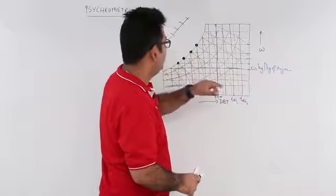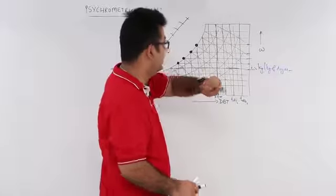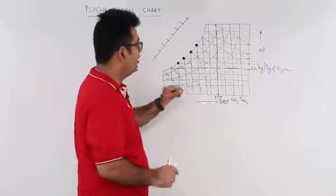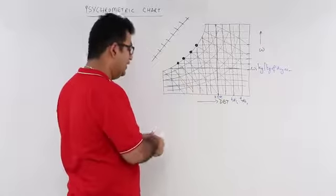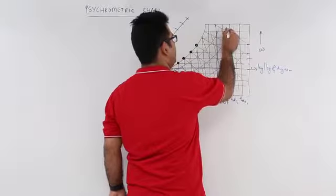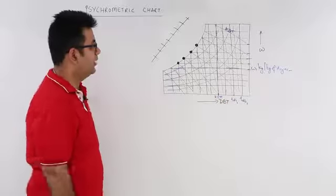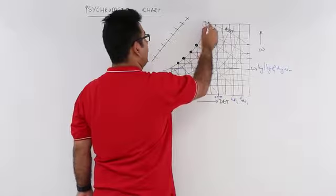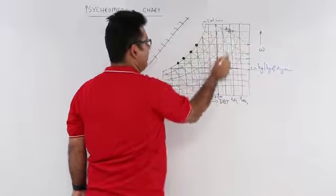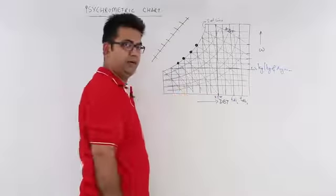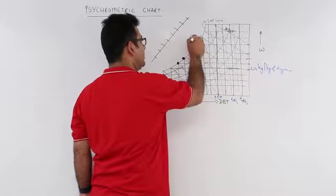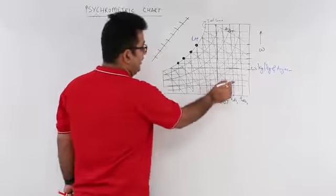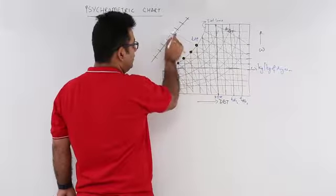Now there are two kinds of slant lines: the black colored ones and the red colored ones. The black colored slant lines indicate the wet bulb temperature. When the wet bulb temperature line meets the saturation line, that intersection point gives us the dew point temperature.